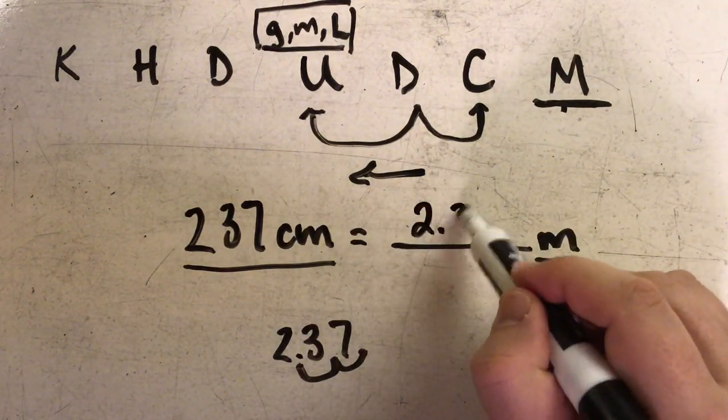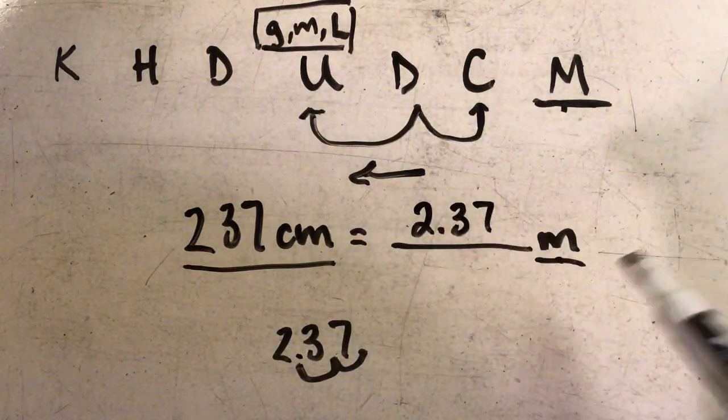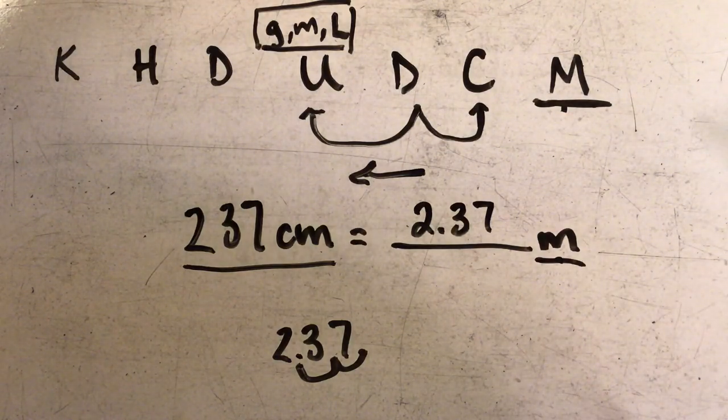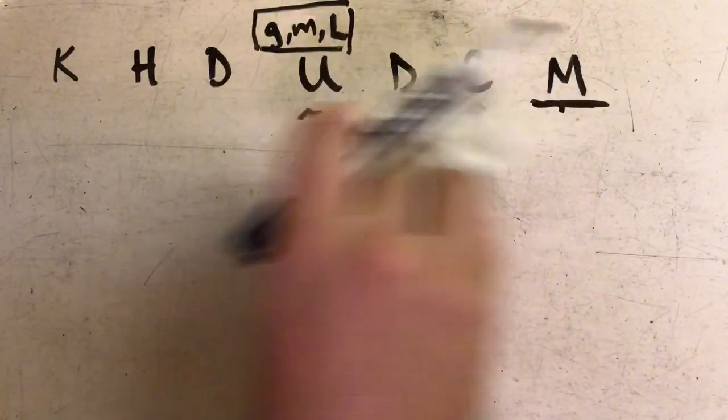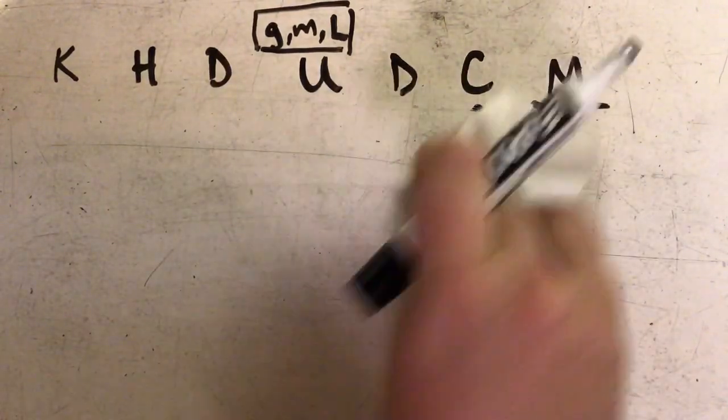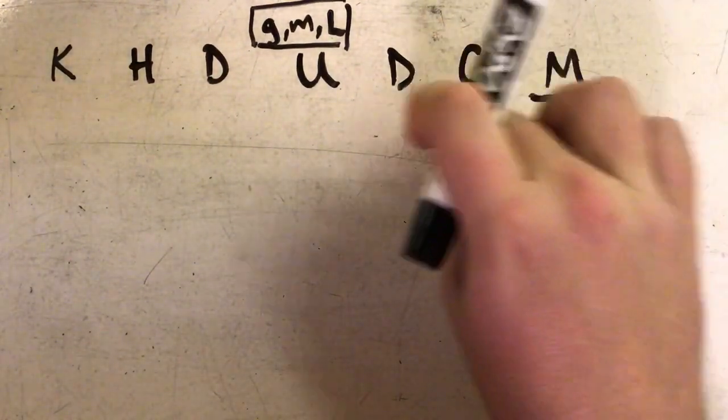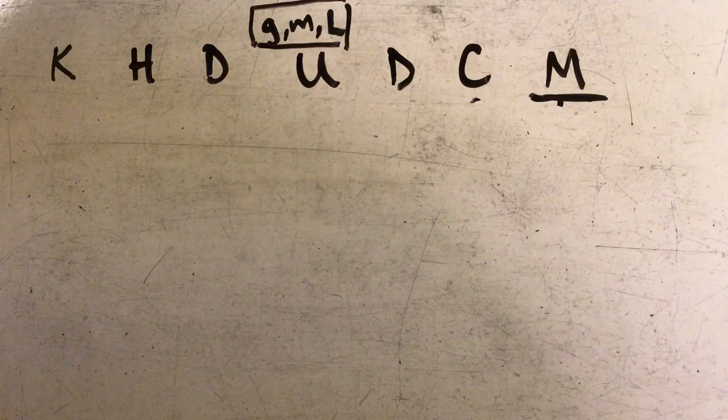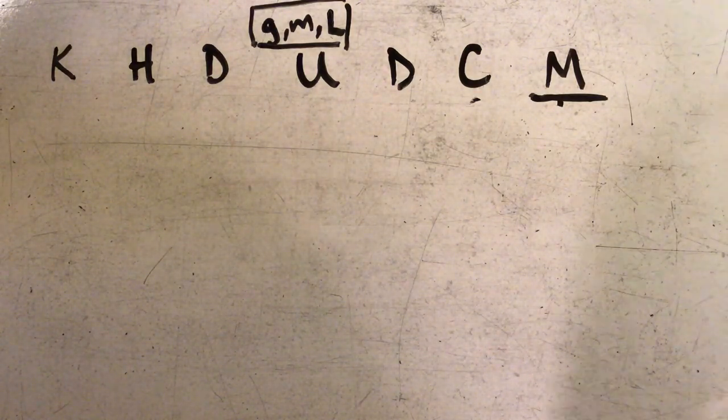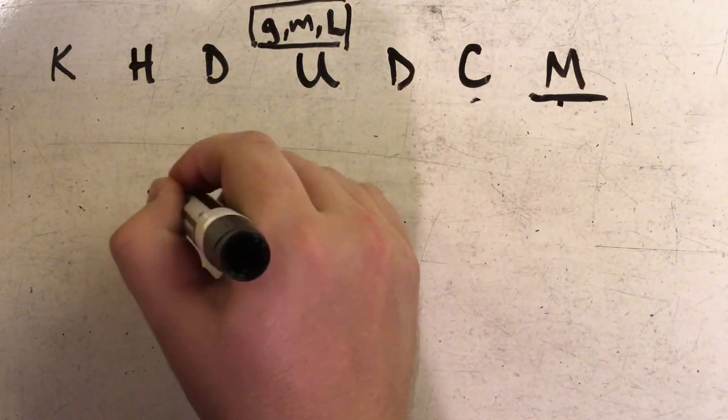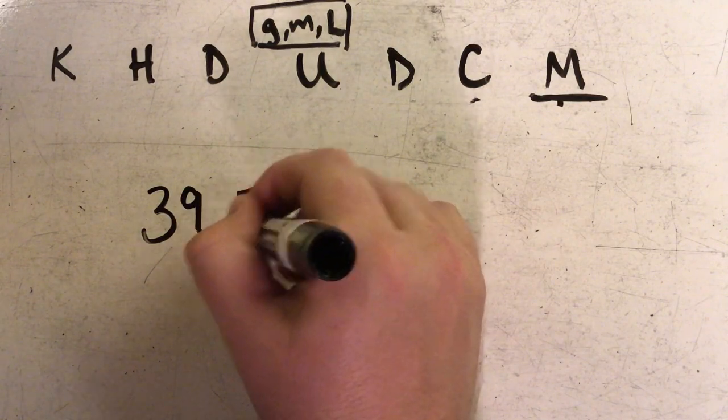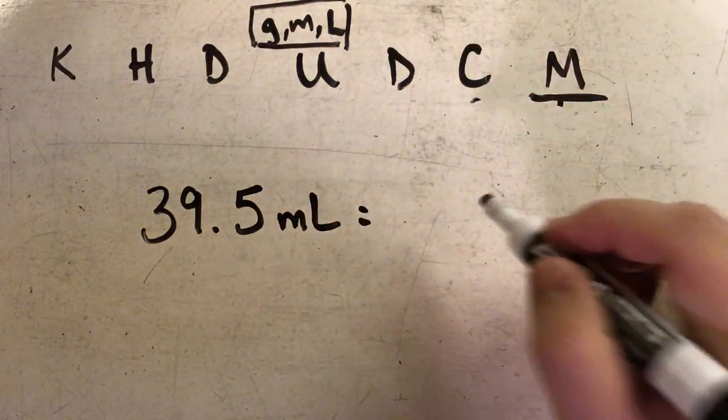Let's try a couple more examples. Let's try an example where we have a decimal already in the problem. Let's say I have 39.5 milliliters. I want to know how many liters does that equal.